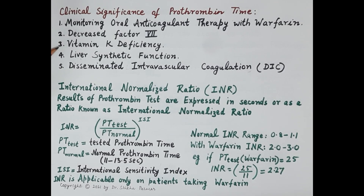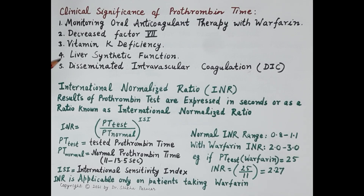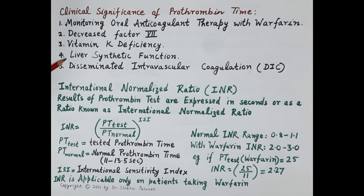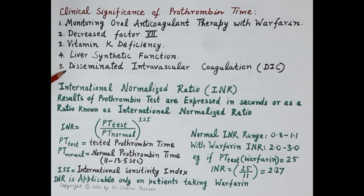Deficiency of vitamin K also increases prothrombin time. Prothrombin time also determines liver synthetic function because the liver is responsible for the synthesis of most clotting factors, and a fall in liver synthetic function increases prothrombin time. In disseminated intravascular coagulation (DIC), there is excessive coagulation — this condition is also monitored by prothrombin time, which is reduced in DIC.